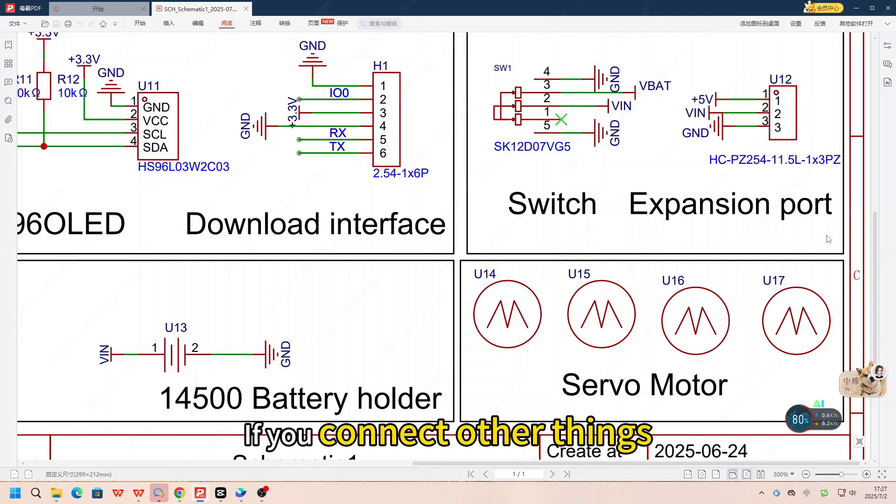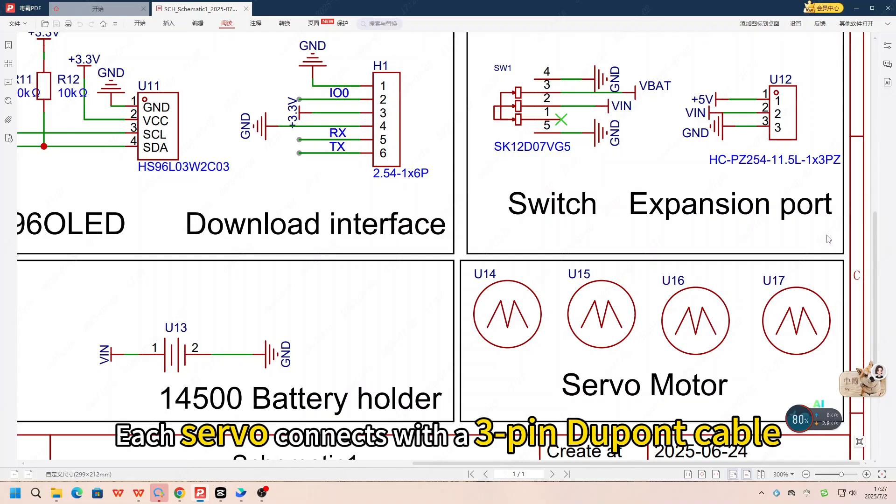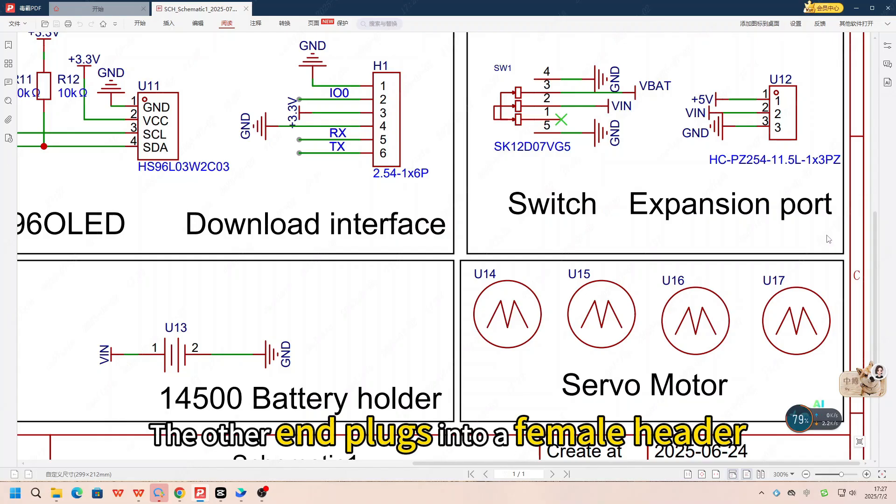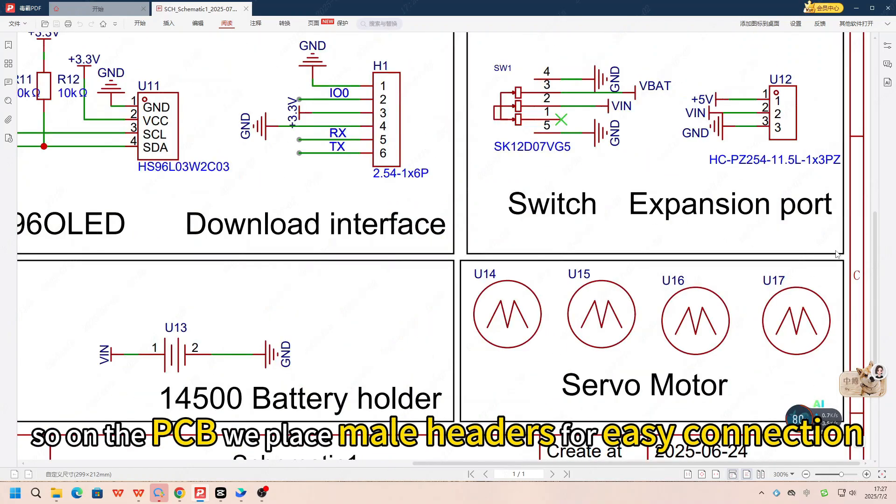If you connect other things, it might overload the regulator and cause issues. Each servo connects with a 3-pin DuPont cable. The other end plugs into a female header. So on the PCB, we place male headers for easy connection.